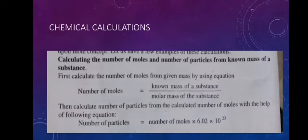Chemical calculation: calculating the number of moles and number of particles from a known mass of substance. First, calculate the number of moles using: number of moles = given mass of substance ÷ molar mass of substance. Then calculate the number of particles from the number of moles using the Avogadro's number equation.